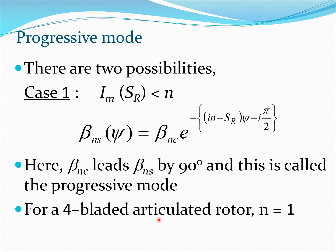This case has two possibilities; it all depends on how imaginary part of SR relates to N. Let's first consider case 1, that is imaginary SR is less than N. In that case beta NS can be written using this equation here and what we can see is that beta NC leads beta NS by 90 degrees and this is also a progressive mode.